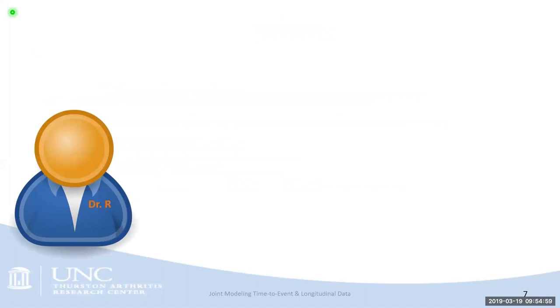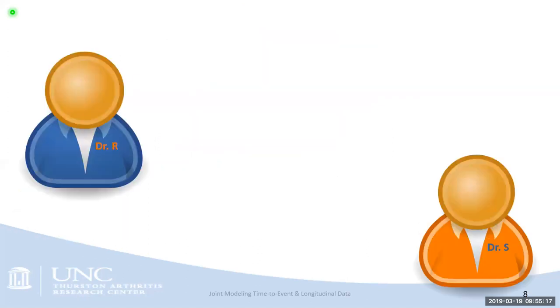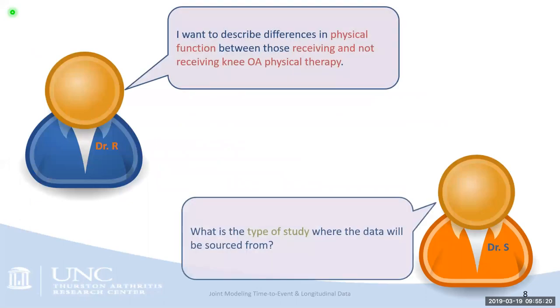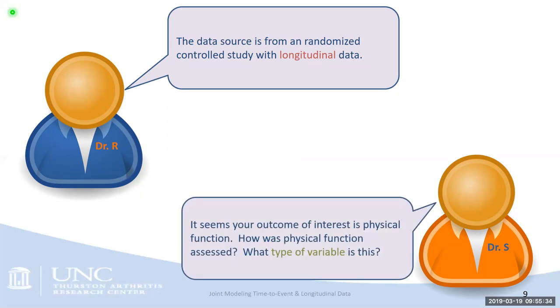Let's start with an example. A researcher has a question dealing with describing differences in physical function between those that receive and don't receive some sort of knee OA physical therapy. The researcher comes to a statistician who begins by asking what type of study the data comes from. We learn that the data is from a randomized controlled study with longitudinal data, and the statistician asks about the outcome — in this case, physical function.